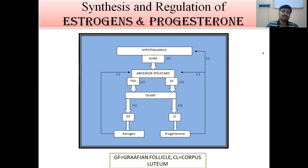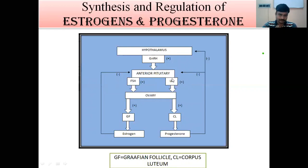From the anterior pituitary, two particular hormones — FSH, that is follicle-stimulating hormone, and LH, luteinizing hormone — are released. These two hormones act on the ovary. After the effect of FSH, the ovary will produce estrogen from the Graafian follicle and progesterone from the corpus luteum.